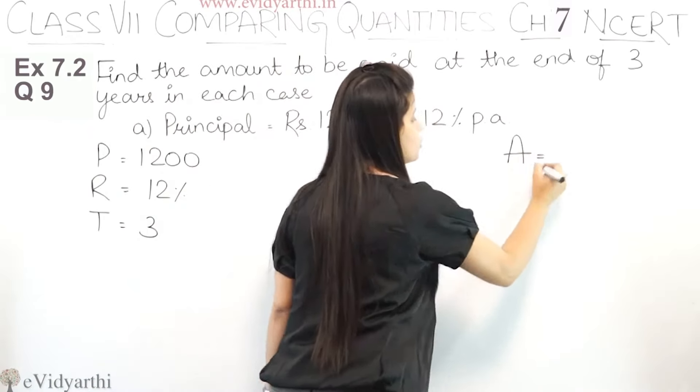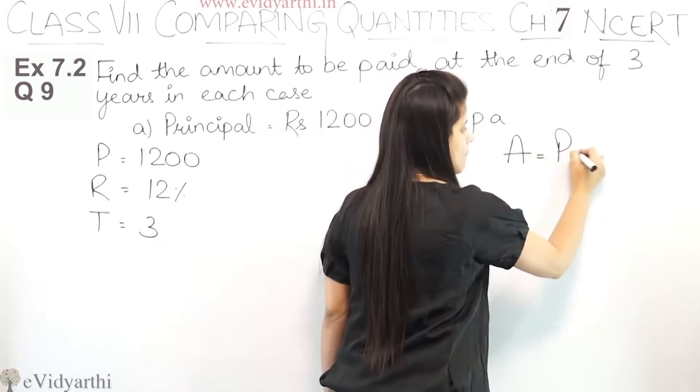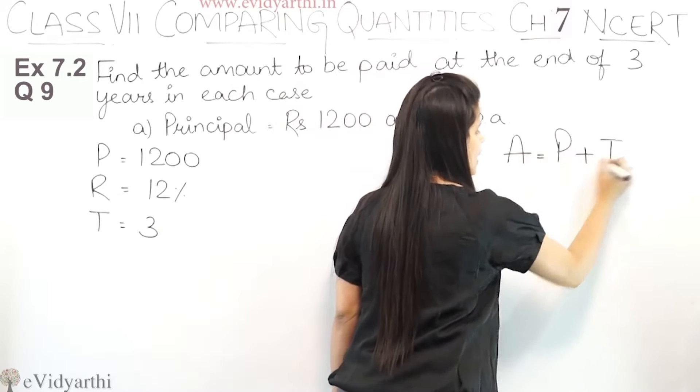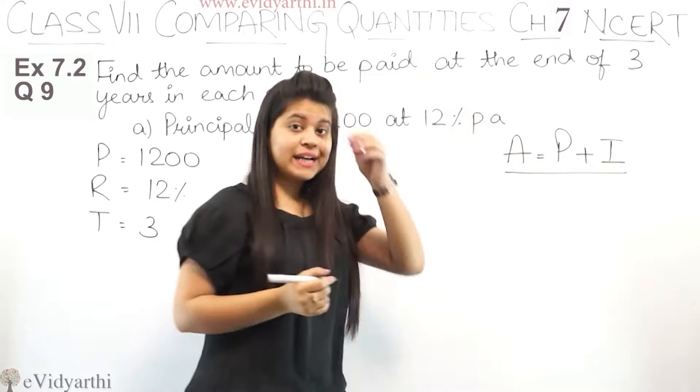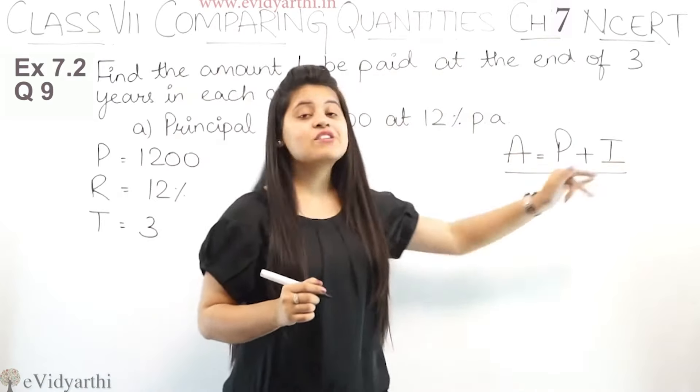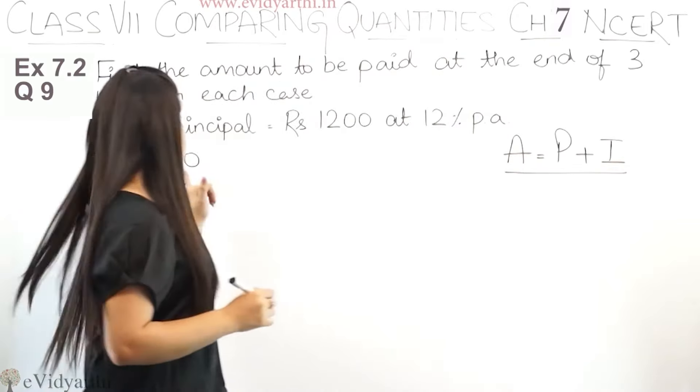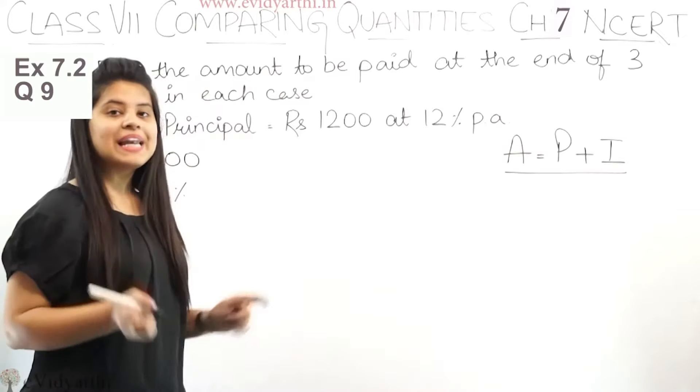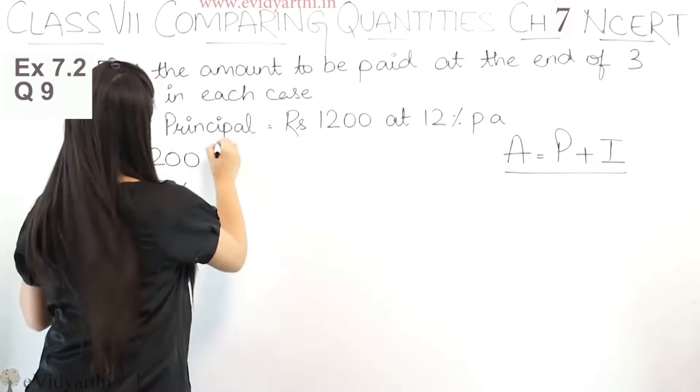Amount we have to know. Amount is principal plus interest. So if you have to find the amount to be paid, then you need to find principal and interest. Principal is given.